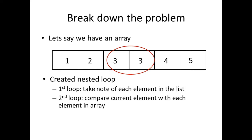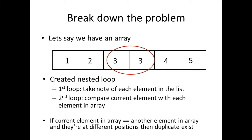The second loop would compare the current element with each element in the array. Once we have that second loop, inside of it we want to add an if condition that checks if the current element in the array is equal to another element in the array. We also want to make sure that the elements we are comparing have a different position. And if those two things are satisfied, then a duplicate element exists within the list.